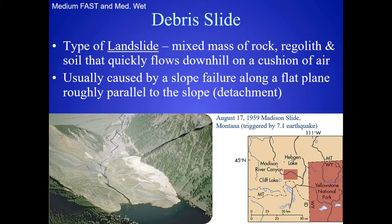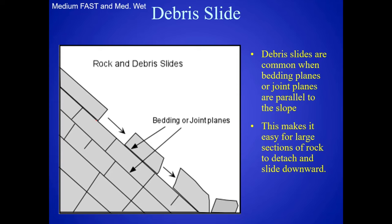A debris slide is a little bit similar. It's a type of landslide where you have a mixed mass of rock, regolith, and soil that moves quickly downhill on a cushion of air. A cushion of air happens when you have a landslide occurring so fast that the air beneath it doesn't have a chance to escape, so the material is actually sliding over the surface on a cushion of air.